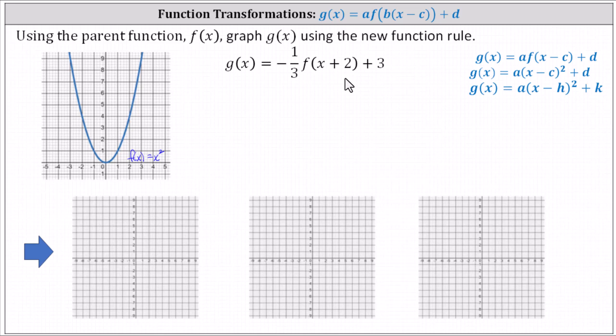Again, if we recognize f of x equals x squared, notice f of the quantity x plus two equals the square of x plus two. We could write g of x as g of x equals negative one-third times the square of x plus two plus three, and then recognize this is in vertex form for a quadratic function and recognize the vertex as negative two comma three.